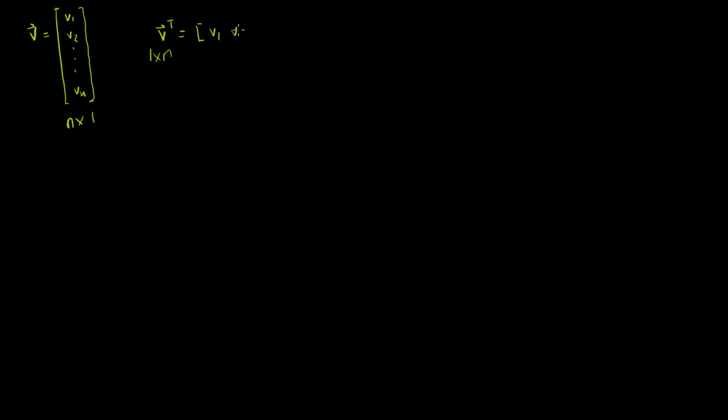Say I have a vector v that's a member of Rⁿ, so it's got n components: v1, v2, all the way down to vn. Now that we've seen what a transpose is and we've taken transposes of matrices, there's no reason why we can't take the transpose of a column vector. If you think of v as an n by 1 matrix, taking its transpose gives a 1 by n matrix: v1, v2, all the way to vn.